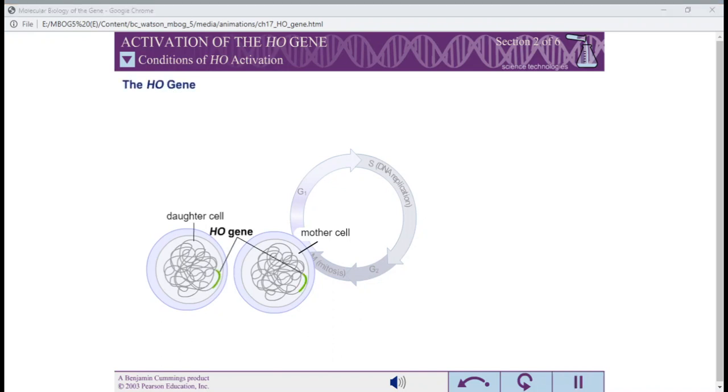The HO gene codes for a specialized DNA cleaving enzyme called HO endonuclease. Expression of the HO gene is tightly regulated. The HO gene is expressed only in mother cells and only at a certain point in the cell cycle.